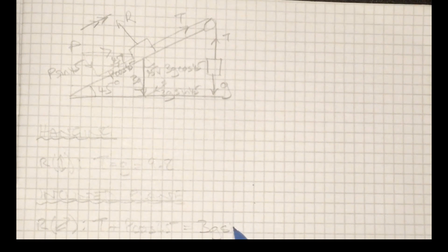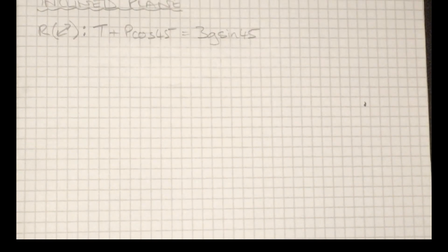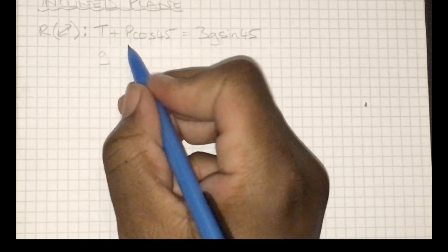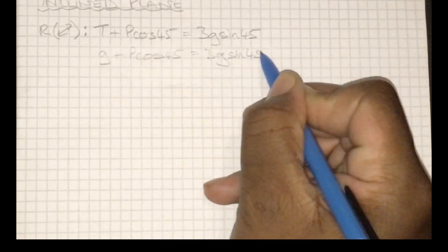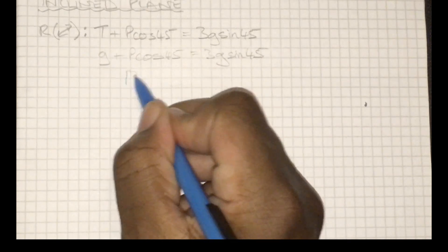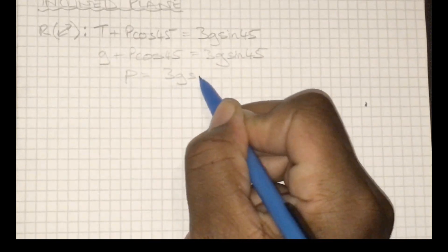Okay, I know that t is g, or 9.8, so I can go ahead and just substitute that in and rearrange to solve for p.